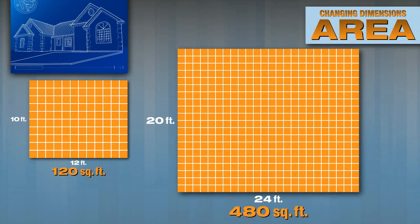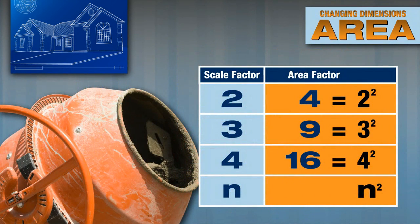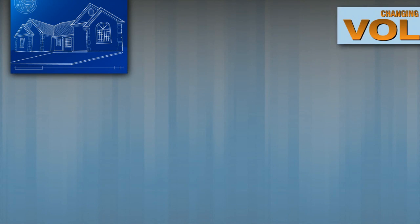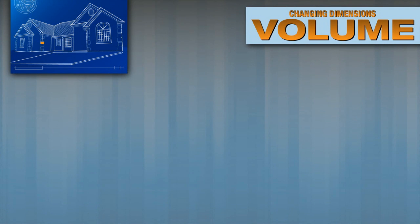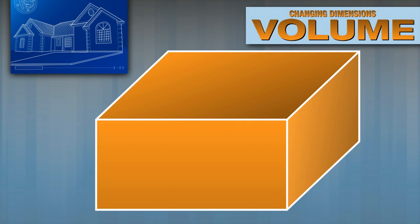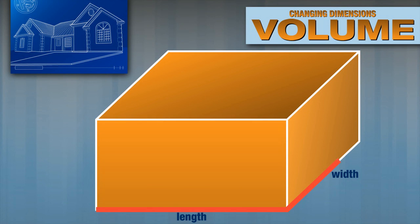In the area video, you saw when linear dimensions are multiplied by a scale factor, the area is multiplied by the scale factor squared. Do you know how changing linear dimensions affects volume? The volume of any rectangular prism is calculated by taking the length times the width times the height.